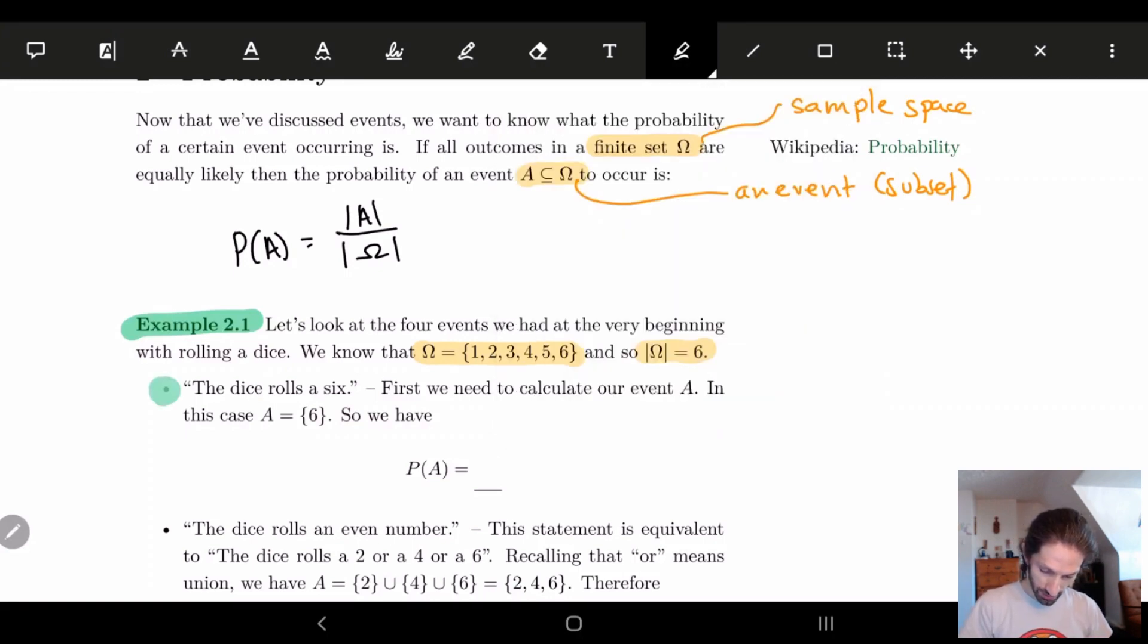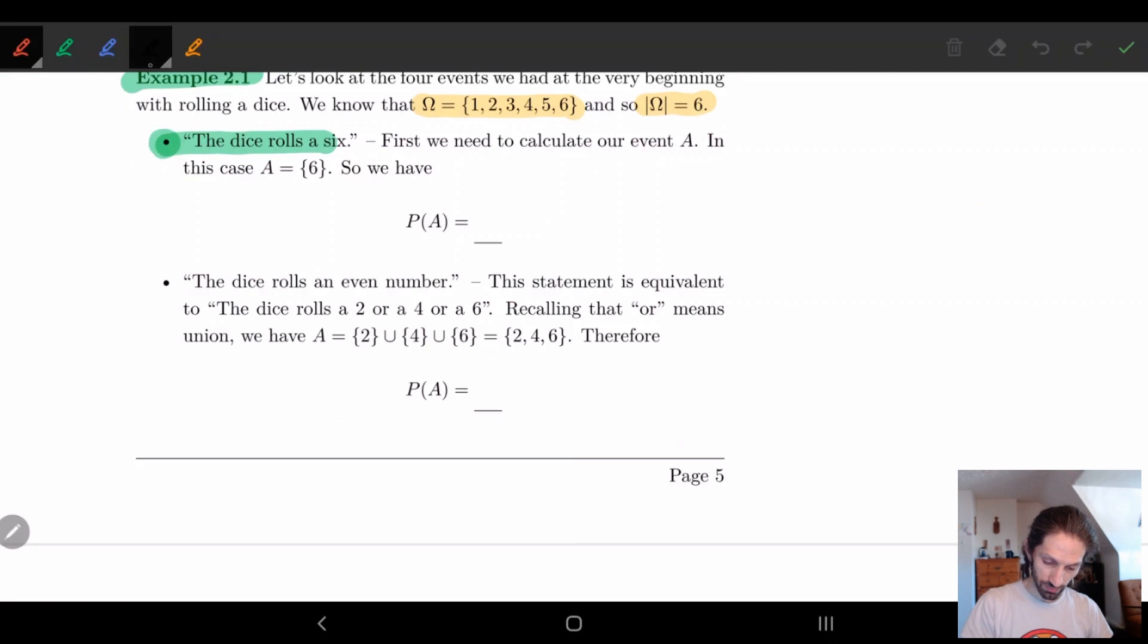So the first one is the dice rolls a six. We went over these sets, so we kind of already know what these should be. So here we know that our event is represented by A is equal to the set {6}, the subset six. So here we know, we said that the probability of A is the size of A over the size of omega. The size of A in this case is just one. There's one element. And the size of omega is six. And so if you think about this, it makes sense, right? Our probability of getting a six is going to be one sixth. So this logically makes sense for us.